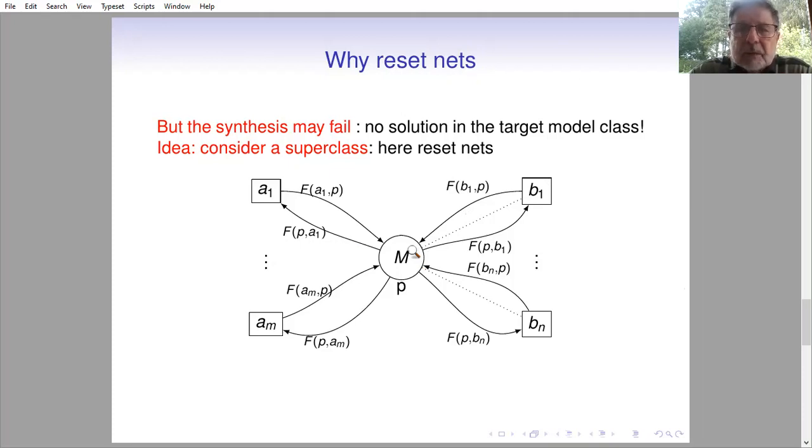Hence the next idea is to consider some adequate subclass. Here we consider choice-free reset nets, where for each place there is at most one transition, either classical or resetting, which may decrease the marking of the place.